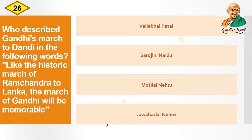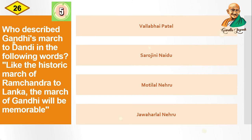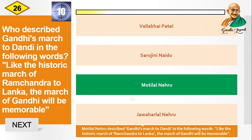Question: Who described Gandhiji's march to Dandi in the following words — "Like the historic march of Ramachandra to Lanka, the march of Gandhi will be memorable"? Options are: Vallabhbhai Patel, Sarojini Naidu, Motilal Nehru, Jawaharlal Nehru. The correct option is Motilal Nehru, who described Gandhi's Dandi march in those words.